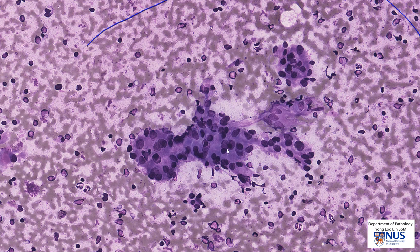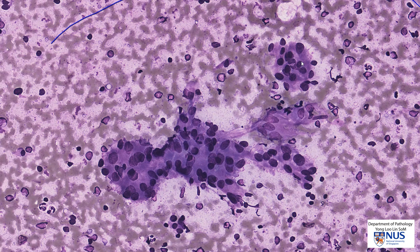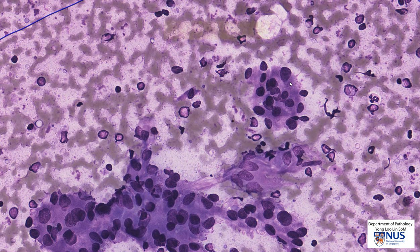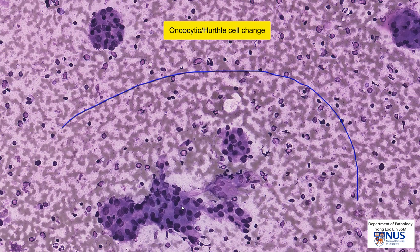Let's focus on the follicular cells. These cells are actually quite large with relatively large nuclei and quite abundant cytoplasm. In some areas the cytoplasm is quite well defined and appears dense, and in other areas there is just a suggestion of granularity of the cytoplasm. These are follicular cells with oncocytic change, or Hurthle cell change.